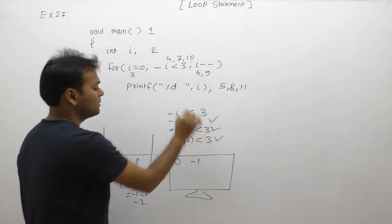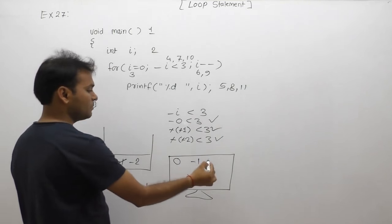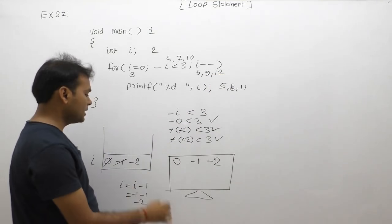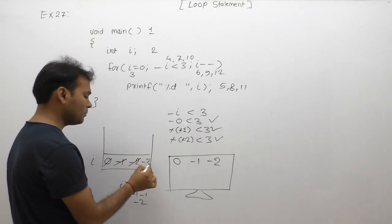i's value transferred 11th case, i's value which is minus 2. Next time increment/decrement section, 12th case. i minus minus performed, i's value becomes minus 3.